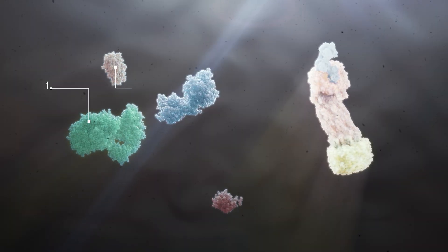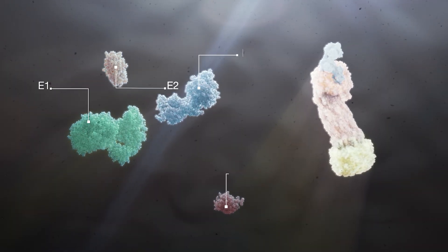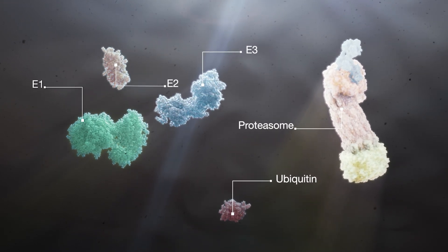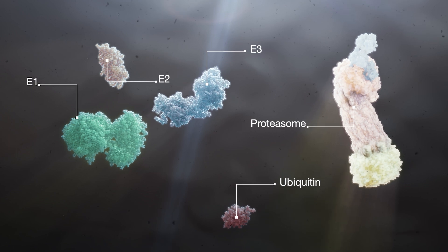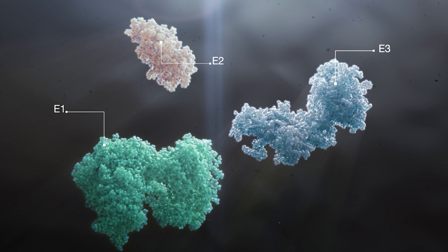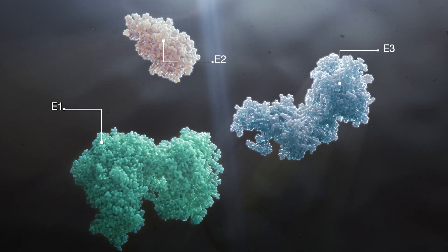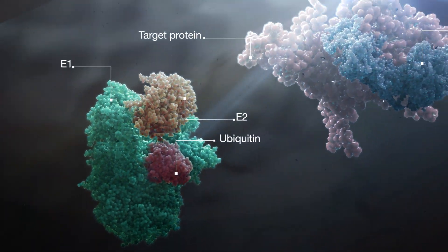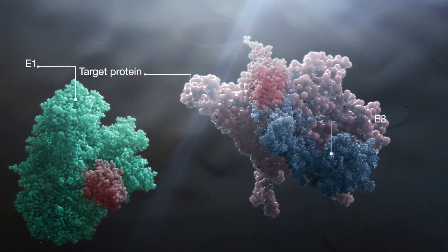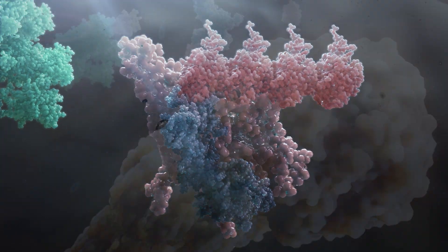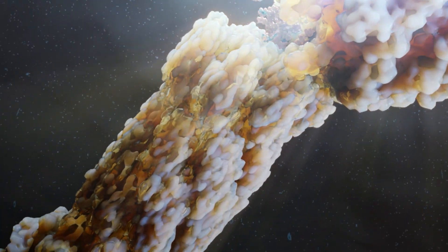The ubiquitin-proteasome pathway, UPP, is a normal cellular process responsible for the degradation of defective or surplus proteins. The UPP involves three enzymes, E1, E2, and E3 ligase, that mark the target protein with a polyubiquitin chain, directing them to the proteasome for degradation.